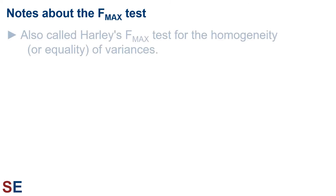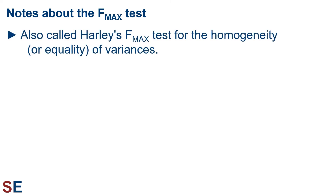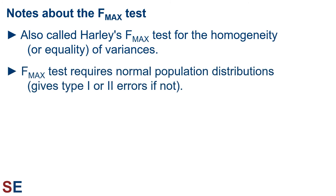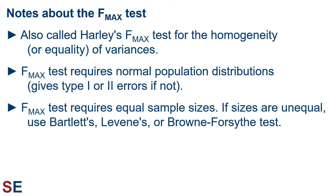A few notes about the F-max test: it is also called Hartley's F-max test for the homogeneity or equality of variances, named after Hermann Hartley, a German statistician who earned degrees from the universities of Berlin and Oxford. Similar to the regular F-test, the F-max test fails if the distribution of values is not normal — when data isn't normally distributed, this test is prone to type 1 or type 2 errors. The F-max test also requires equal sample sizes for all groups. If the sample sizes aren't all the same, we should use Bartlett's, Levene's, or Brown-Forsythe test instead, as these are also less sensitive to non-normality.